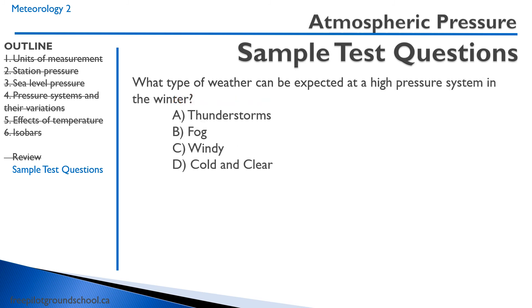What type of weather can be expected at a high pressure system in winter? Remember, you're going to have very stable air. A, thunderstorms — rule that out. B, fog — generally not; rare but possible. C, windy — no, that's usually associated with a trough. D, cold and clear — that's the correct answer. Thanks all for joining me. We'll see you on our next meteorology lesson.